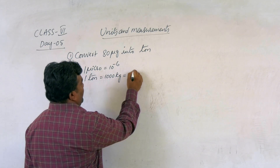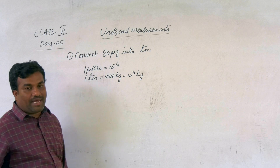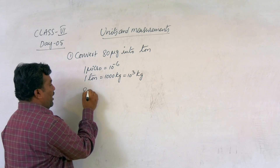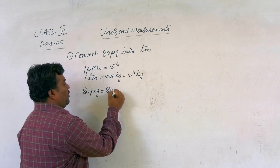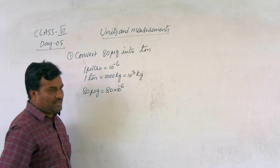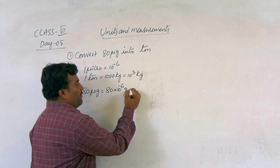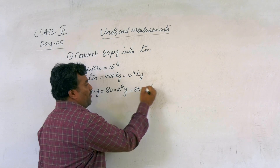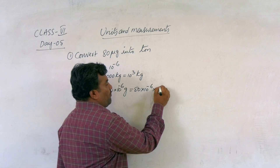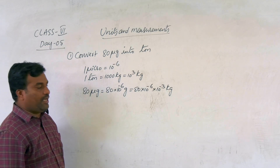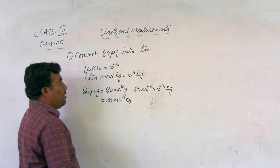1 ton equals 10 to the power of 3 kg. Now converting 80 micrograms: 80 microgram equals 80 into 10 to the power of minus 6 grams. Next, this is converted to the SI system of units, so that is 80 into 10 to the power of minus 6, then into 10 to the power of minus 3 kg. Finally, you get 80 into 10 to the power of minus 9 kg.